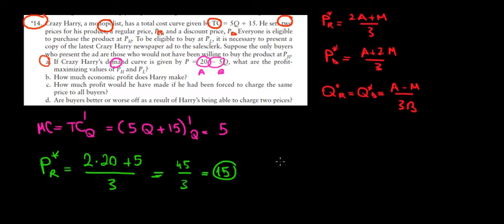Now let's find out the price for the discount customers. Well, we will have again the intercept A, which is 20 in our case, plus two times the marginal cost, which is two times 5 divided by 3. So we got 20 plus 10, that's 30 divided by 3, that's equal to 10. That's going to be the price for the discount customers. So we got the prices.